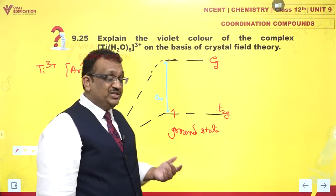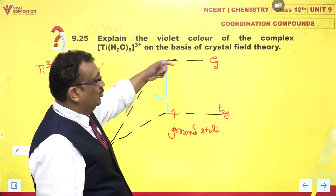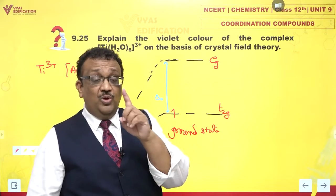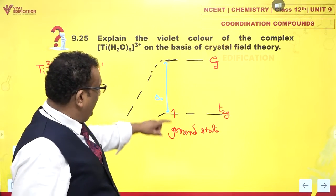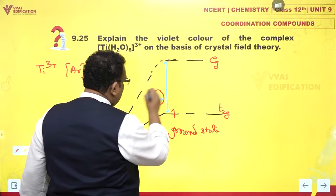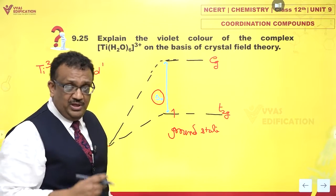Now, what is the possible excited state when this electron jumps and goes here? There is only one excited state possible. And for jumping up, it needs energy equal to delta O.